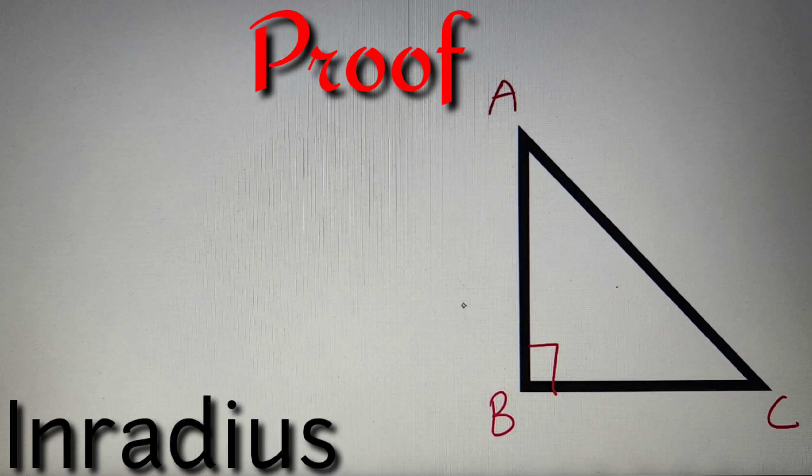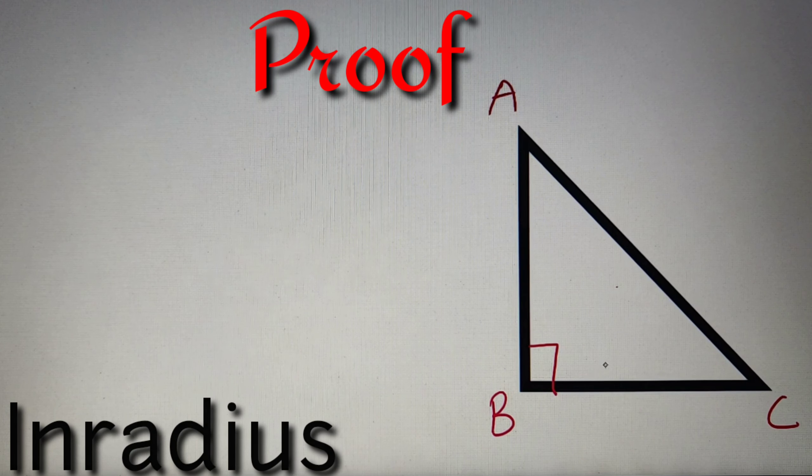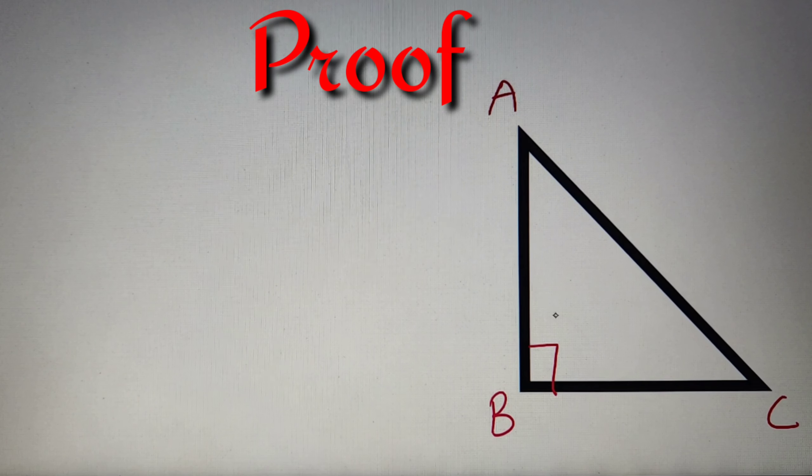Now for all those who don't know what is inradius of a triangle, let us discuss it briefly. Inradius of a triangle is nothing but the radius of the largest possible circle that can be drawn which touches all the three sides of the triangle and the circle which is drawn is known as the incircle of the triangle.